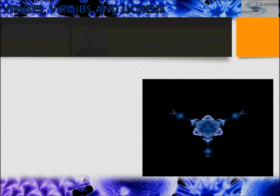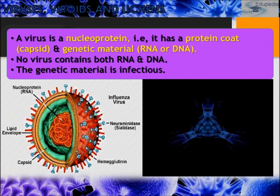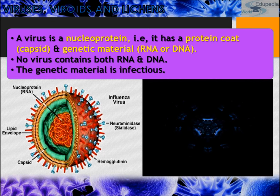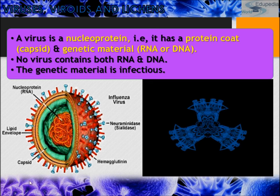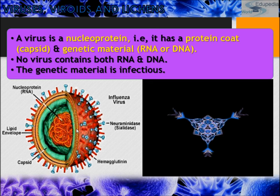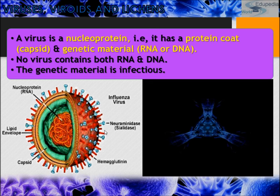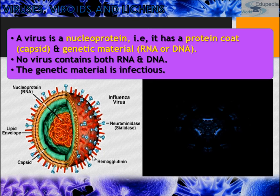A virus is a nucleoprotein — it has a protein coat called the capsid and the genetic material may be RNA or DNA. No virus contains both RNA and DNA — remember this. The genetic material is very infectious. This is the influenza virus: it contains RNA, has neuraminidase spikes, hemagglutinin, a capsid sheet, and a lipid envelope.